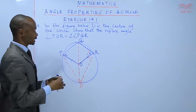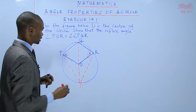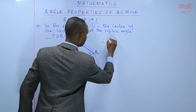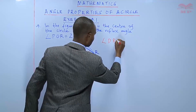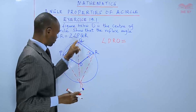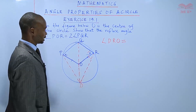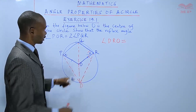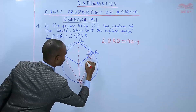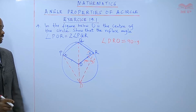Meanwhile, I am interested in angle DRO, because it is going to help me get the reflex angle. I will get angle DRO. Because the angle subtended by chord QD, which is angle QRD, is equal to 90 degrees. So to get angle DRO, it will be equal to 90 minus Y degrees. That is angle DRO.